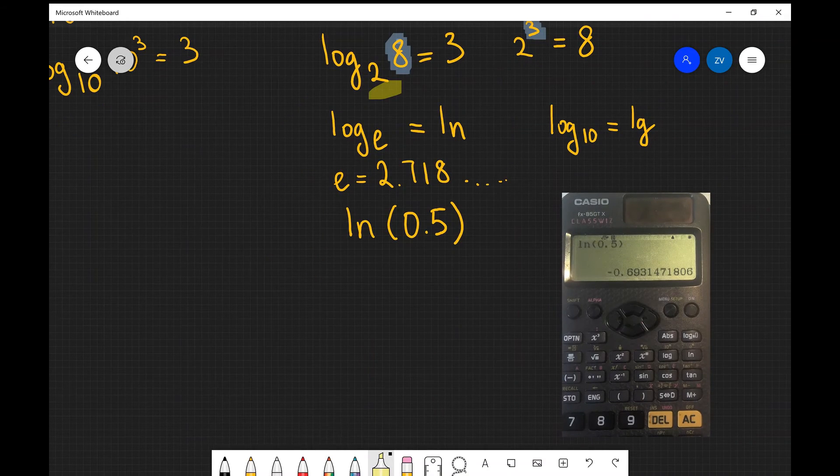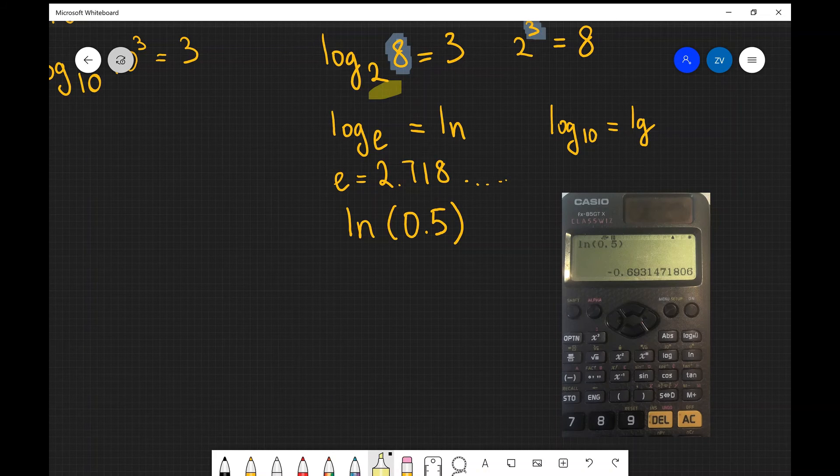So in the case of my scientific calculator the ln function is just here. If I was to just input ln of 0.5 I'm going to get minus 0.6931 etc. So this is how we can calculate exponential functions and how we can calculate logarithmic functions.